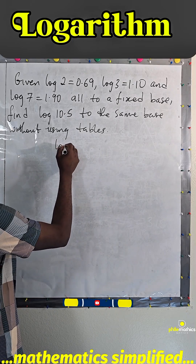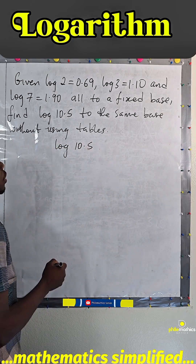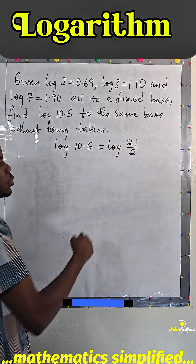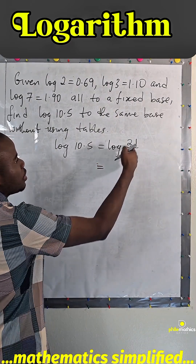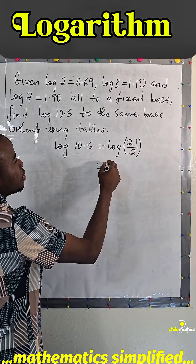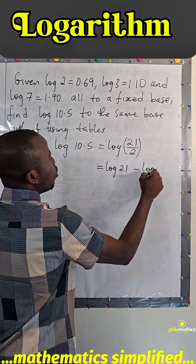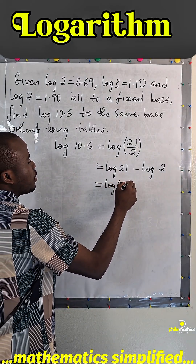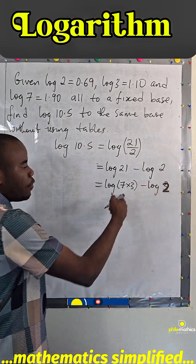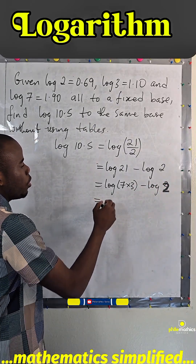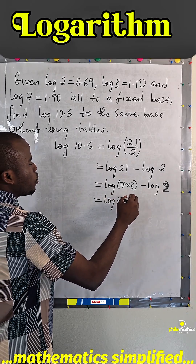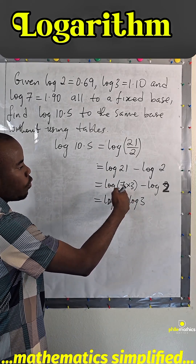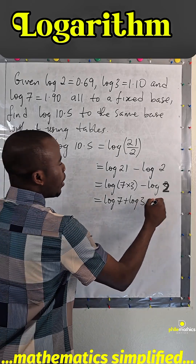Now, look at log 10.5. You'll agree with me that this is the same as log(21/2), because 21 over 2 is 10.5. So from the laws of logarithms, log(21/2) is log 21 minus log 2. And we can split 21 as 7 times 3, so from the addition law, this becomes log 7 plus log 3, minus log 2.